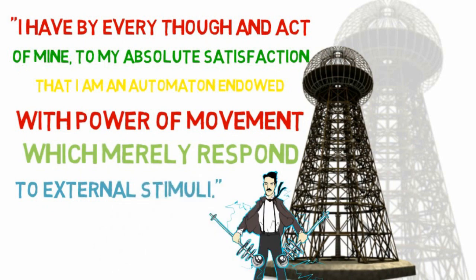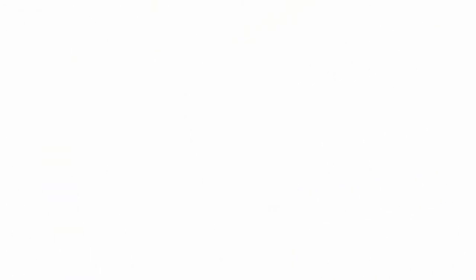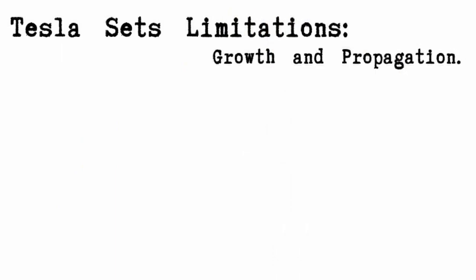Thus, the concept of the robot was born. However, an element of the human remained present, as Tesla asserted that these human replicas should have limitations, namely growth and propagation.